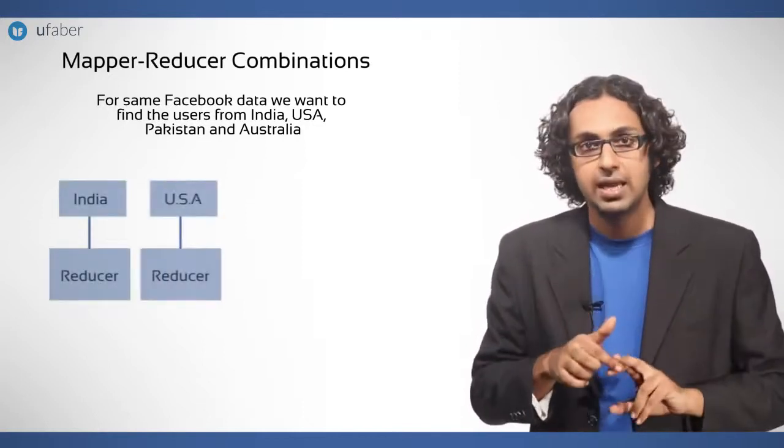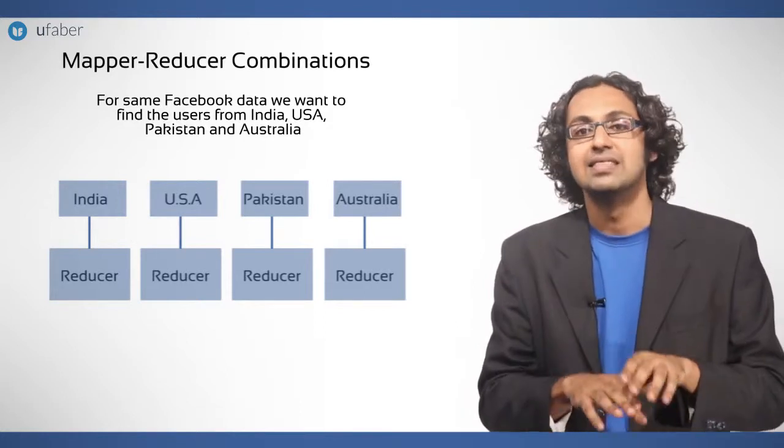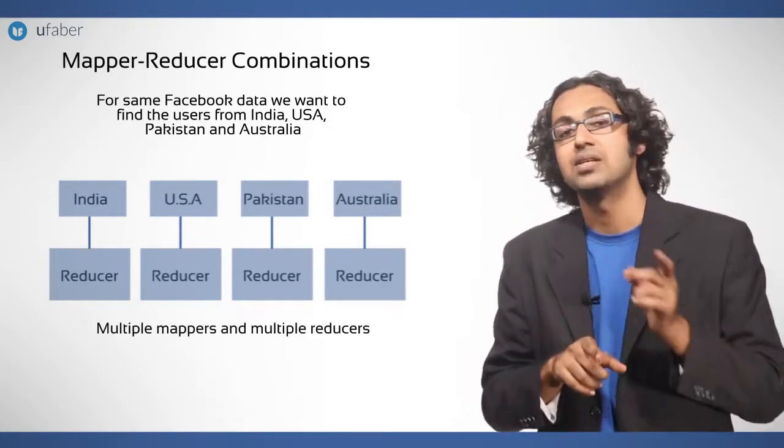One for India, one for USA, one for Pakistan and the last one for Australia. This is the example of multiple mappers and multiple reducers.